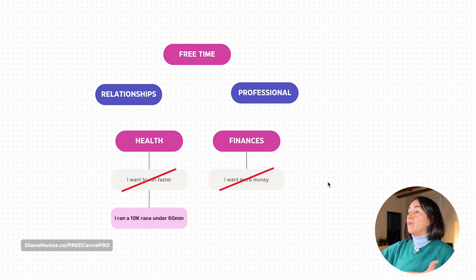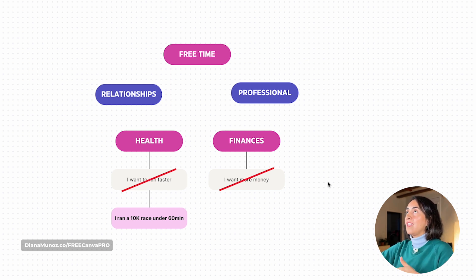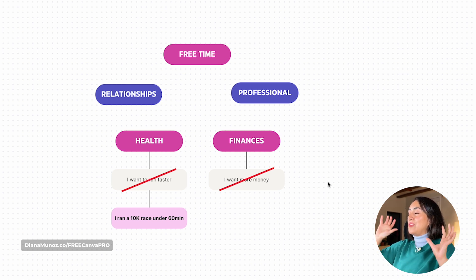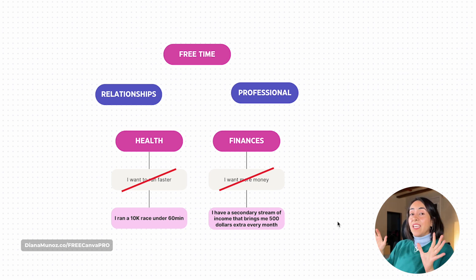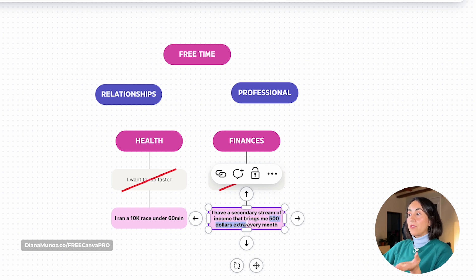So you're going to take these basic sentences and transform them. Instead of saying 'I want to run faster,' you can say something like 'I run a 10k race under 60 minutes.' I was able to run 10k in one hour and five minutes, so I want to be better than that. I also wrote this sentence as if the event already happened — this helps your mind believe it's possible. And instead of 'I want more money,' you can write 'I have a secondary stream of income that brings me $500 extra every month,' being specific about the amount and the time period.